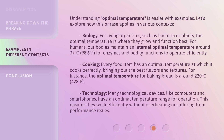In cooking, every food item has an optimal temperature at which it cooks perfectly, bringing out the best flavors and textures. For instance, the optimal temperature for baking bread is around 220 degrees Celsius, or 428 degrees Fahrenheit. In technology, many technological devices like computers and smartphones have an optimal temperature range for operation, ensuring they work efficiently without overheating or suffering from performance issues.